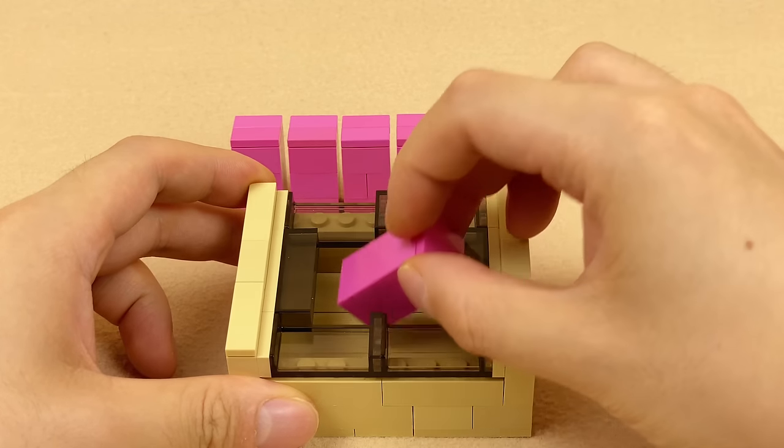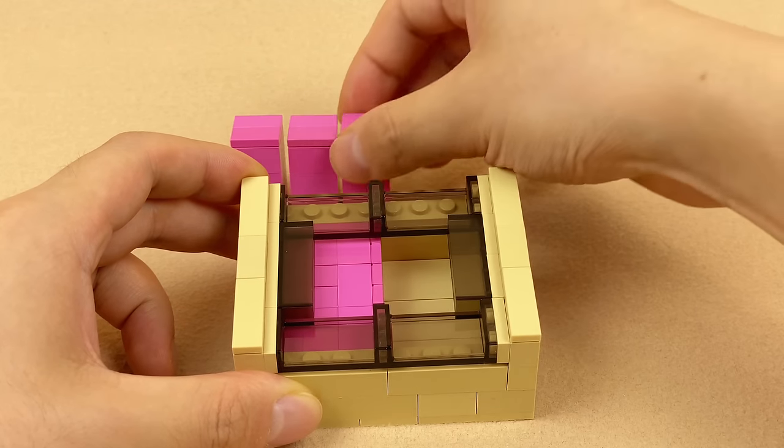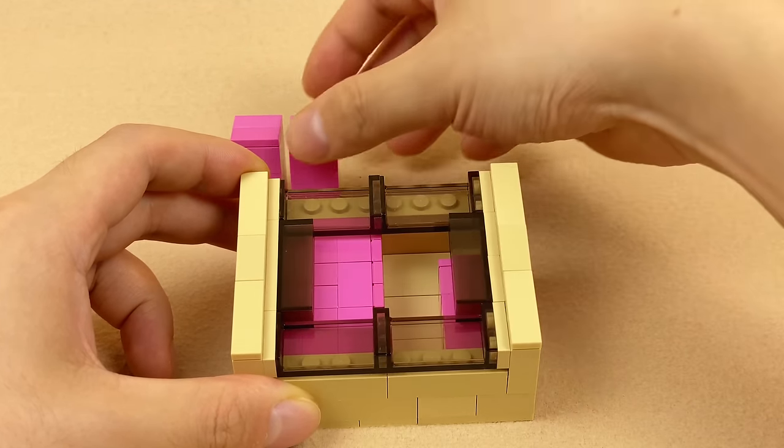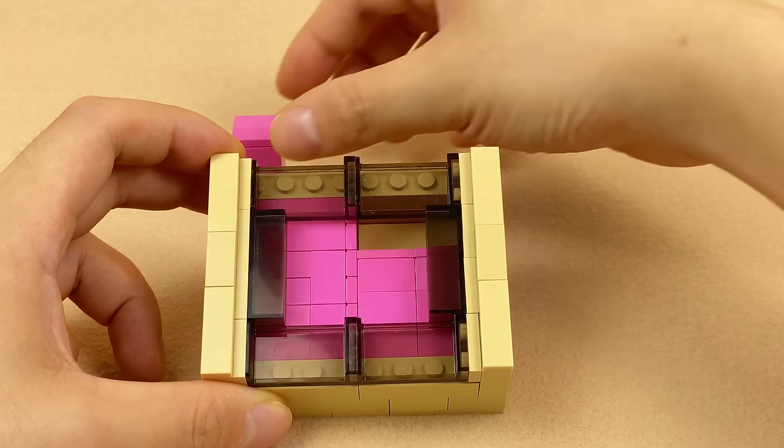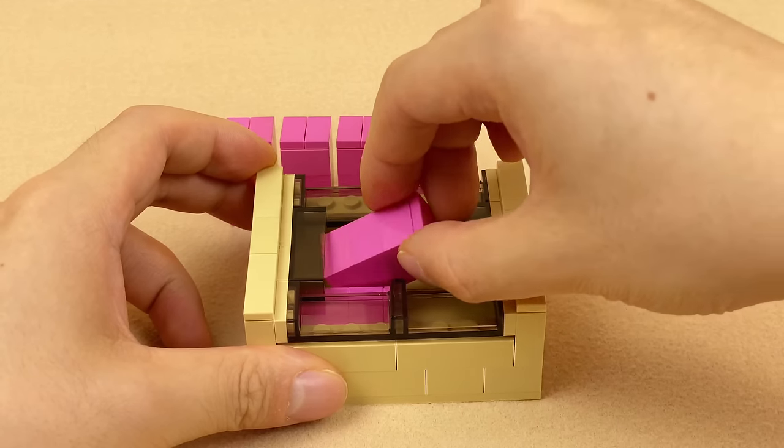This puzzle is a classic one, and you need to put all six cubes into the box through the square shaped hole. At first you may fill the cubes inside one by one, but you will soon find out that the hole is blocked by the cubes you just put in, and there is no way to put in the last one.